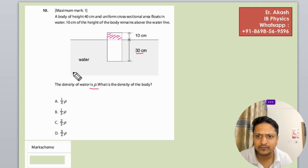The density of water is rho, and we have to find the density of the body, which is rho b.